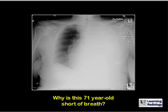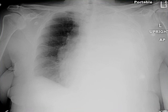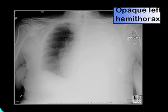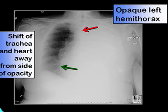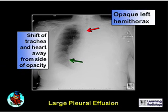This is Diagnosis 8. Why is this 71-year-old short of breath? There is an opacified left hemithorax, and the trachea and heart are shifted away from the side of opacification, indicating something occupying space on the left side. This is indicative of a large left pleural effusion. In this case it was due to an underlying bronchogenic carcinoma.